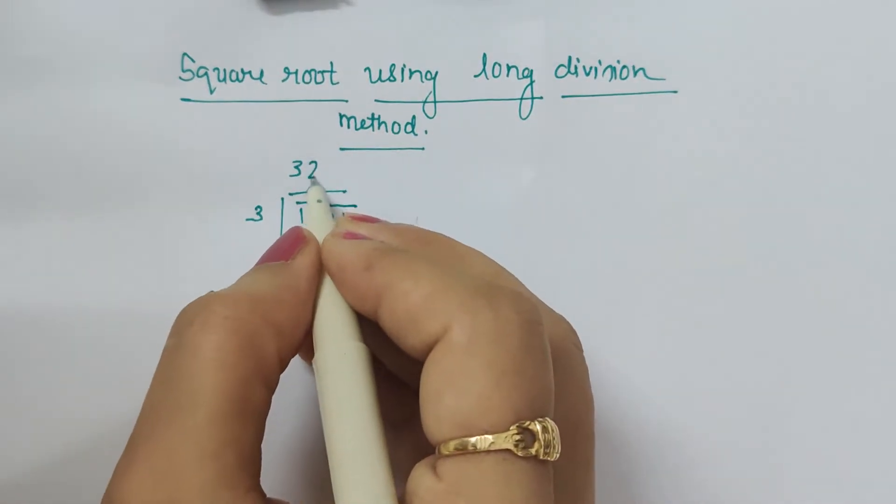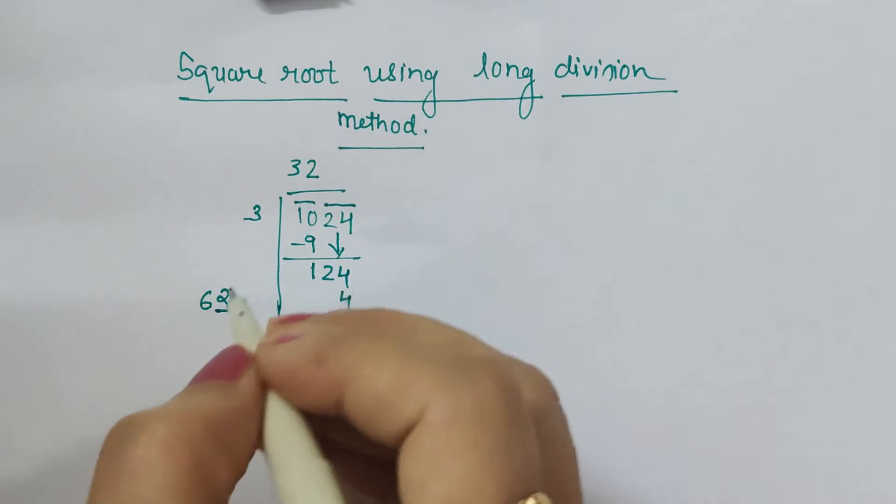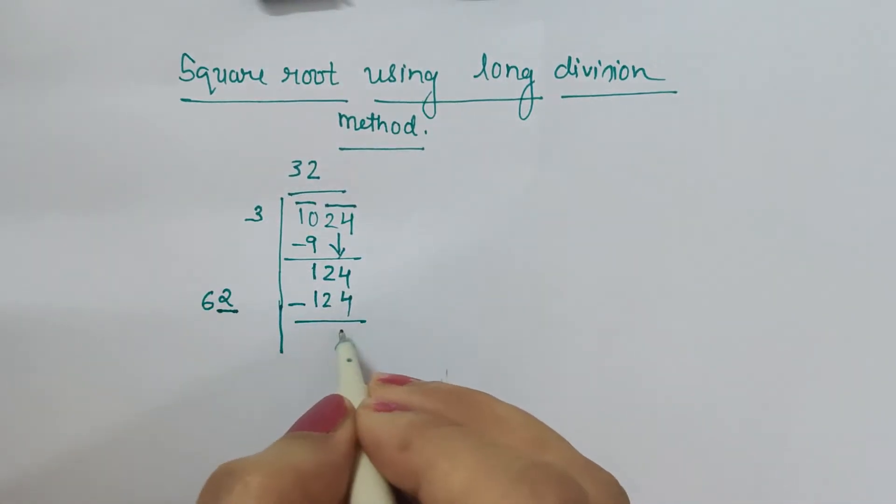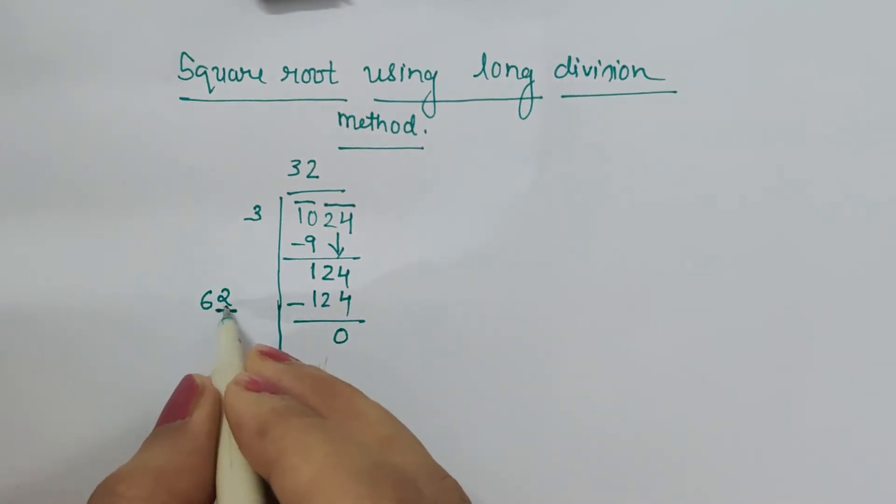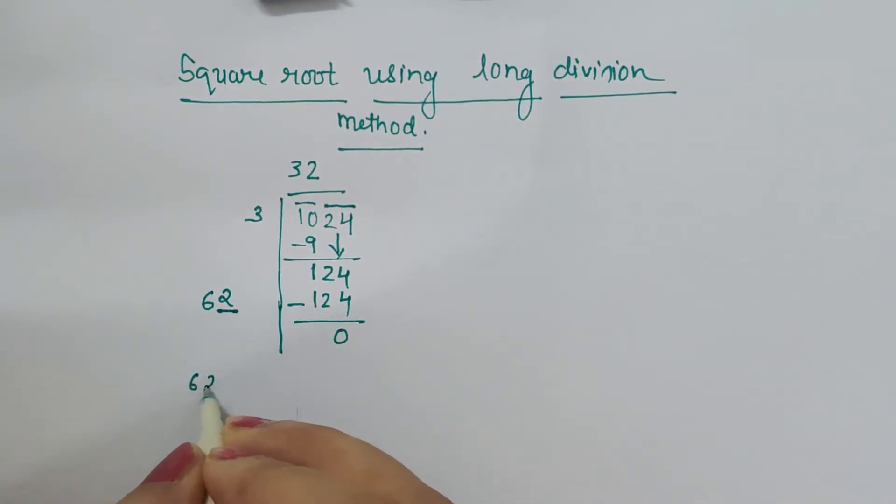If I do 62×2: 2×2 is 4, 2×6 is 12, and the remainder is 0. We have to always ensure that when we check for this extra digit 62×2, this and this should be same.